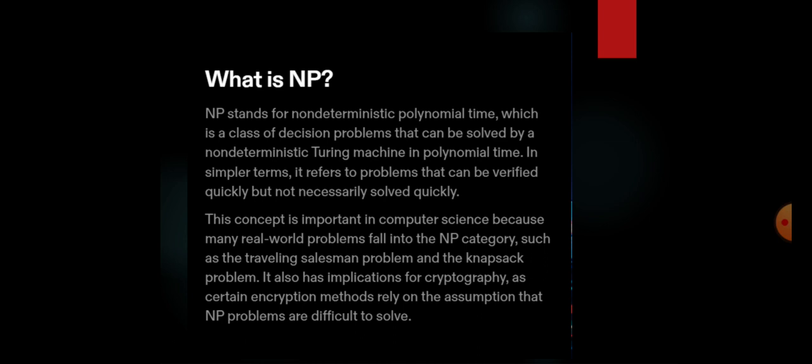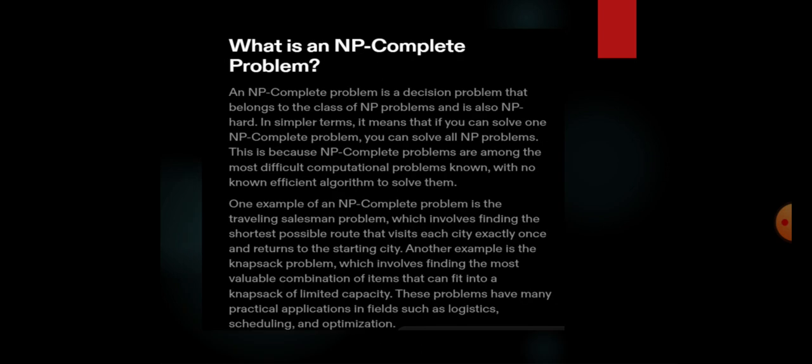What is NP? NP stands for non-deterministic polynomial time, which is a class of decision making problems that can be solved in a non-deterministic Turing machine in polynomial time. In simpler terms, it refers to problems that can be verified quickly but not necessarily solved quickly. This concept is important in computer science because many real world problems fall in the category of NP problems, such as the traveling salesman problem, knapsack problem, all these problems are under the category of NP problems.